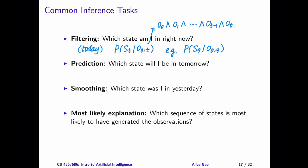Prediction cares about a future state. Given the observations until today, what is the probability that I am in a particular state on a day in the future?